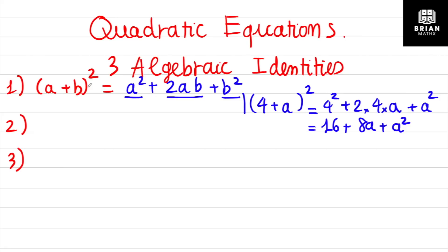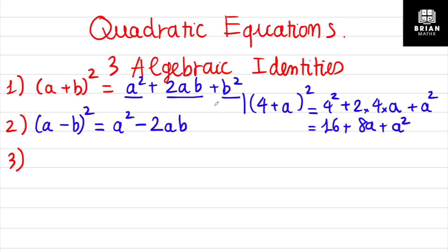Now for the next identity: the square of difference. You have (a minus b) squared — that's the expression inside the bracket with a square outside. It equals a squared. Because this one is minus, you don't have plus 2ab anymore — you get negative 2ab. But the third term is still plus b squared, just like in the first algebraic identity.